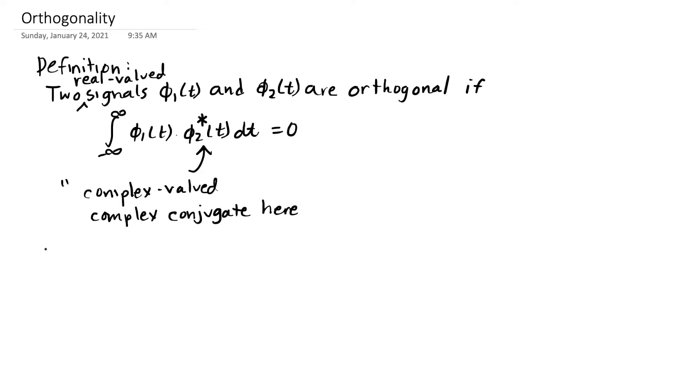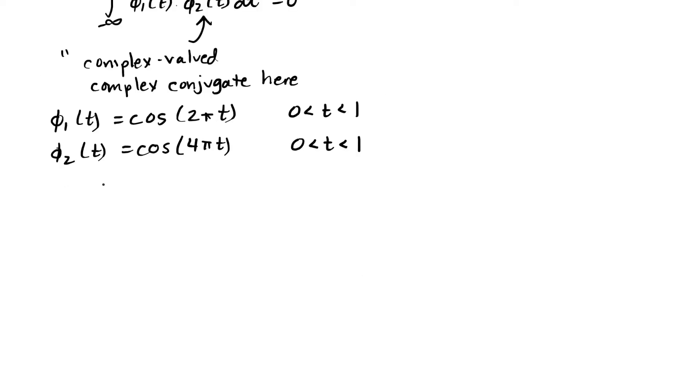Now we have this example in the last segment of two cosines. One was a signal, and I'm going to call it phi1 of t now, that was cosine of 2 pi t. And another signal that was cosine at a higher frequency, that was actually 4 pi t. And this was for t between 0 and 1, and 0 everywhere else.